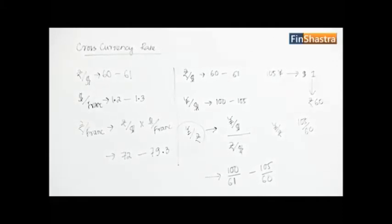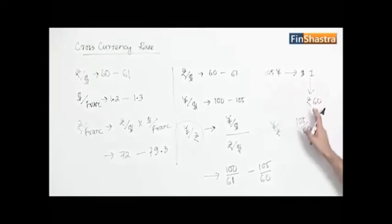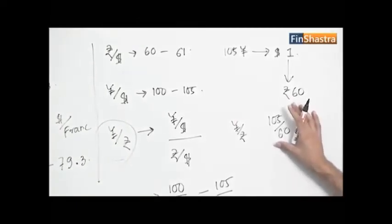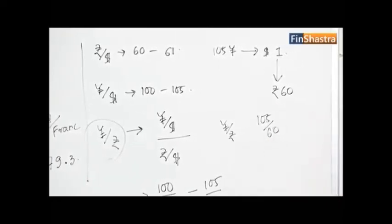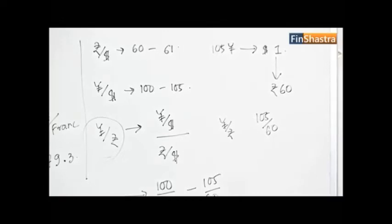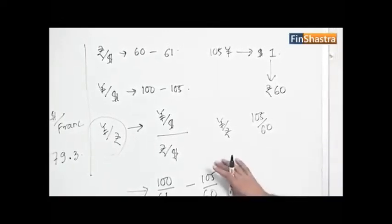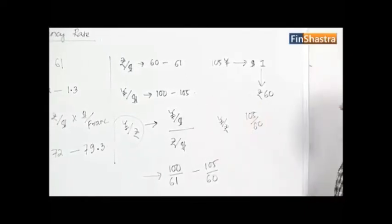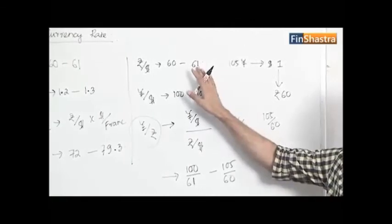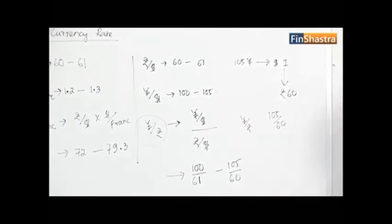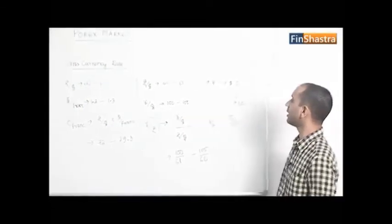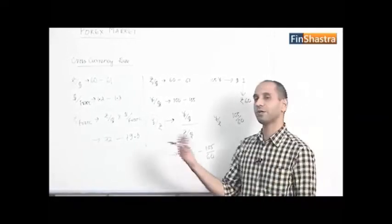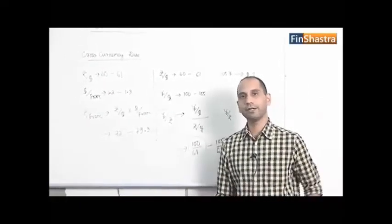Starting from the other side: 61 rupees converts to 1 dollar, and 1 dollar converts into 100 yen (at the bid rate of 100). So 61 rupees fetches 100 yen — this is the rate at which you sell rupees to fetch yen, making it the bid rate for yen per rupee. The ask rate, 105/60, is the rate at which you buy rupees with yen.